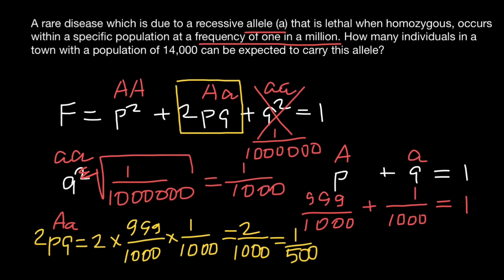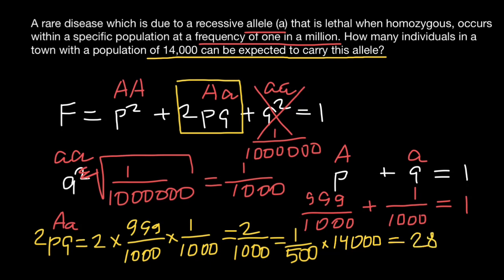Our question asks how many individuals in a town of 14,000 can be expected to carry this allele. We multiply the heterozygous frequency by 14,000: 14,000 / 500 = 28. So the answer is 28 individuals. That is all for today — subscribe and see you in the next video, goodbye!